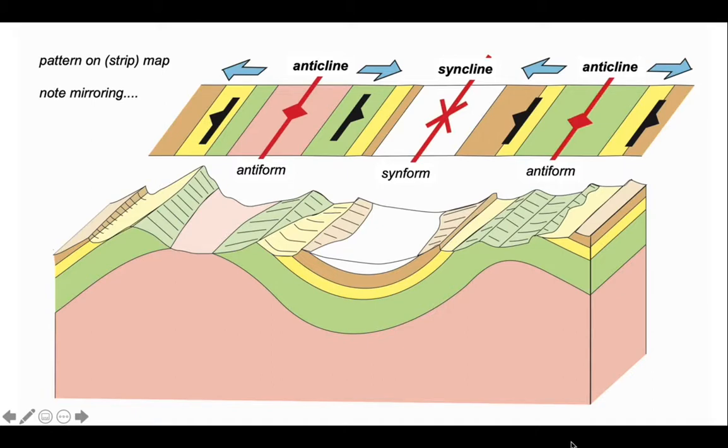And we can put the axes of the folds in with these standard notations. And the critical feature is to note that the sequence of rocks is mirrored about these axes. So as we go out from the antiform on the left, we go from red out to green to yellow to brown symmetrically across that fold axis.